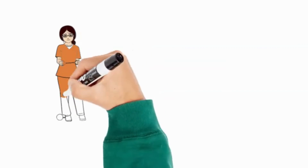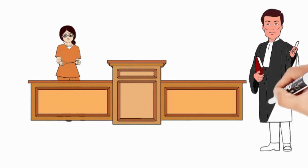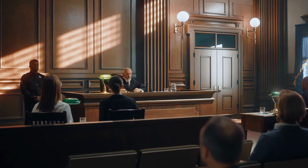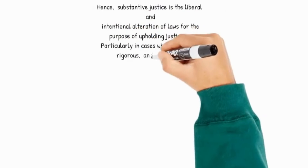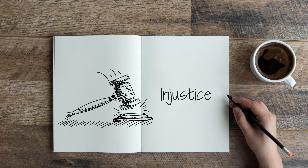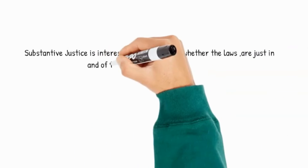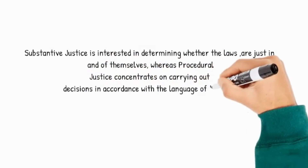Substantive justice, on the other hand, is a concept. It maintains that the law must be just and fair in order to be used as a measure of justice. Substantive justice is a derivative of the word 'substance,' which means of the essence or essential of a thing. Hence, substantive justice is the liberal and intentional alteration of laws for the purpose of upholding justice, particularly in cases where a formal, rigorous, and restrictive application of the law will result in difficulty, absurdity, or injustice. As a result, substantive justice is interested in determining whether the laws are just in and of themselves, whereas procedural justice concentrates on carrying out decisions in accordance with the language of the law.